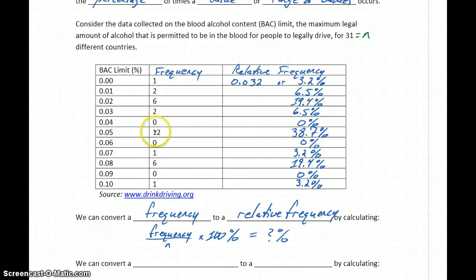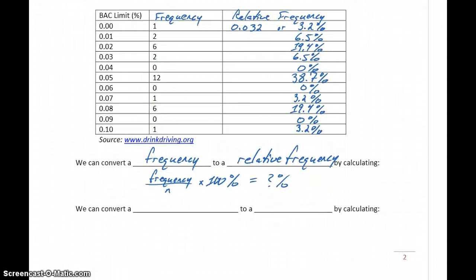So converting these frequencies to a relative frequency just gives us a different way of looking at that information. For instance here, I can see that 12 is the largest number, but it might be a little bit harder to interpret how much of the total result that takes up. If we convert that to a percent, we know it's just a little bit under 40%. So not quite half, but getting close to half of the countries surveyed had their BAC limit set at 0.05. So just depending on what information we want to get across, sometimes it's easier to convert things to percents, sometimes it's better to leave things as a frequency, but we'll see things reported both ways.